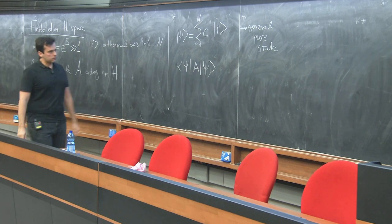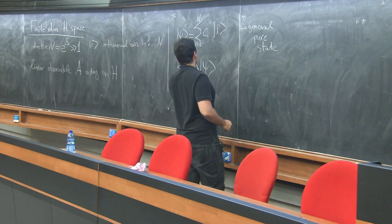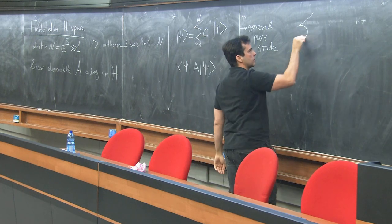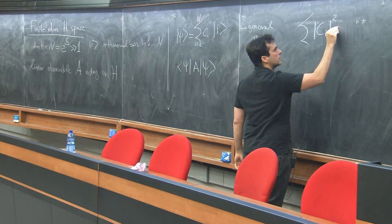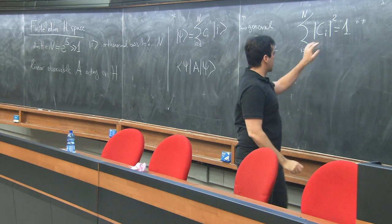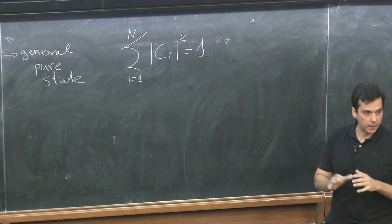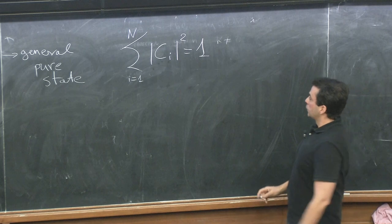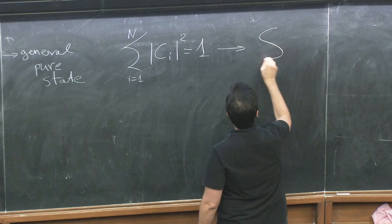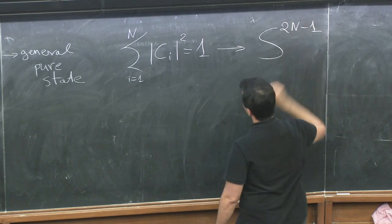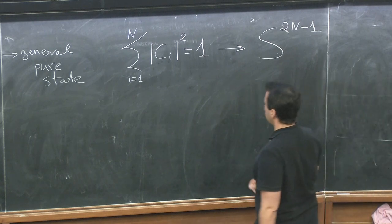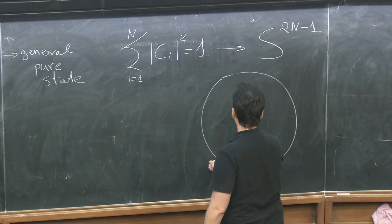To prove the statement, first the coefficients must obey Σ|c_i|² = 1. These are complex numbers, so splitting into real and imaginary parts, this equation defines a sphere of dimensionality 2N−1 of unit radius. The set of pure states of this Hilbert space can therefore be thought of as points on a sphere of very large dimensionality.